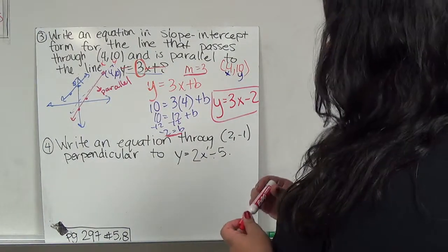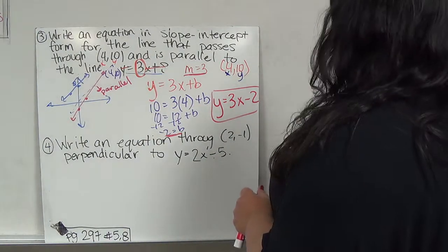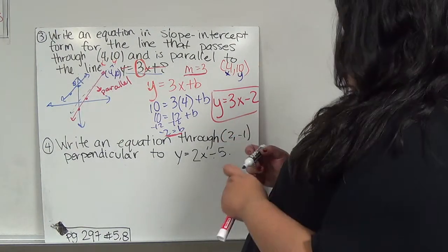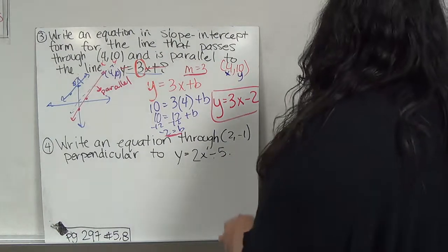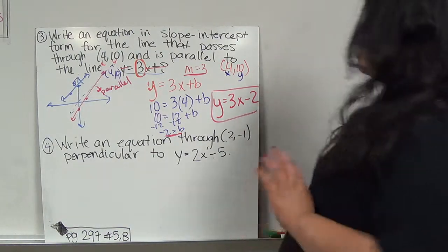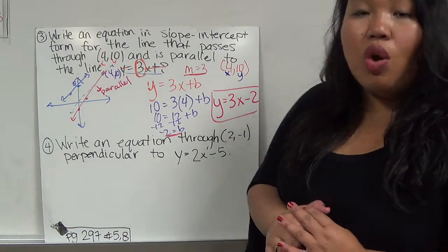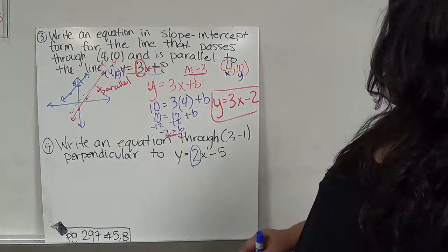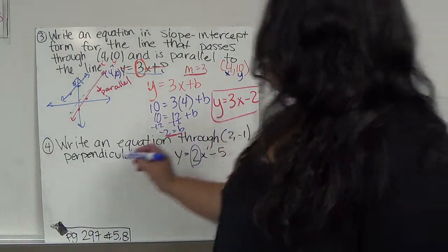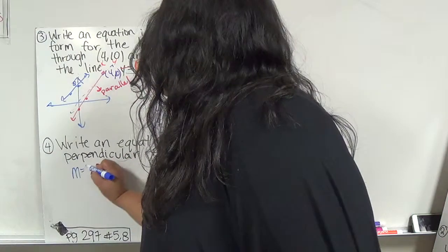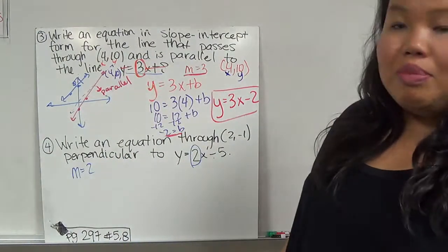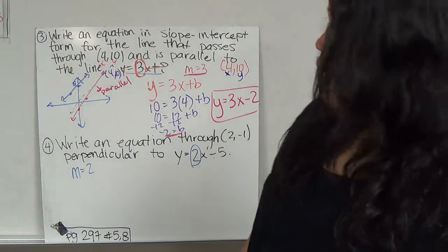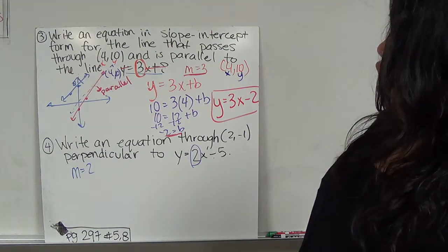Now you're not going to have to graph it every time. I'm just using this to illustrate to you. What this is saying is I have a line that goes through 4, 10, but it's parallel, the same slope as this line. So number 4 is very similar except instead of asking to write an equation parallel, it's asking me to write an equation perpendicular through 2, negative 1. I do the same steps. The only thing is instead of this 2x, I'm not looking for parallel, so my m is not going to be 2, but my m is going to be perpendicular to 2.